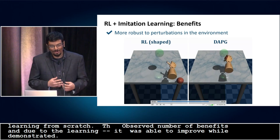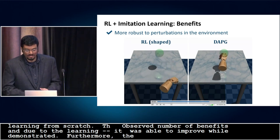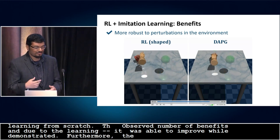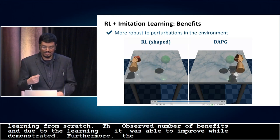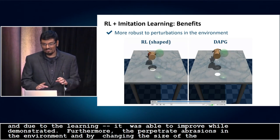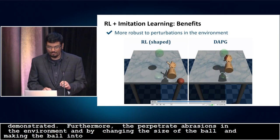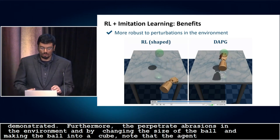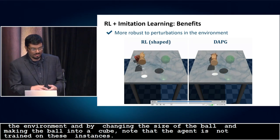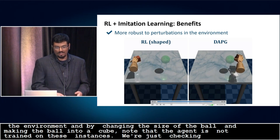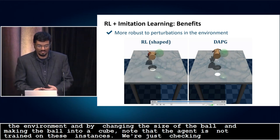The policies trained with DAPG are also more robust to variations in the environment. We illustrate this by changing the size of the ball to be manipulated and by making the ball into a cube. Note that the agent is not trained on these new instances — we are checking robustness zero-shot. The DAPG policy is able to cope with these variations, whereas the pure reinforcement learning policy is extremely brittle.